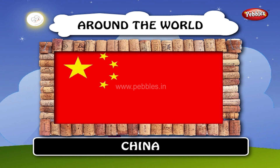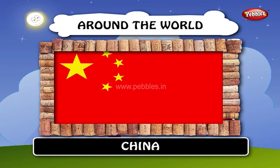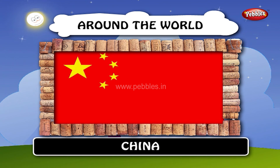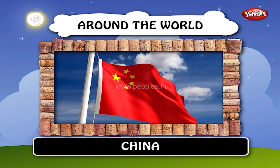China — the flag of the People's Republic of China is called the five-starred red flag. The final design was red with a large yellow five-pointed star and four smaller yellow five-pointed stars in the upper hoist-side corner. The color red symbolizes the spirit of the revolution, and the five stars signify the unity of the people of China under the leadership of the Chinese Communist Party.